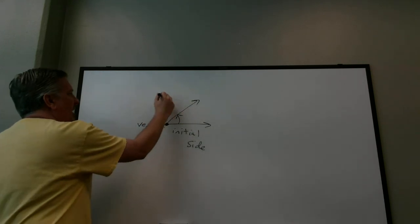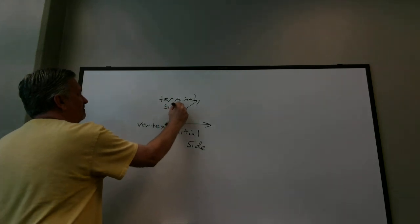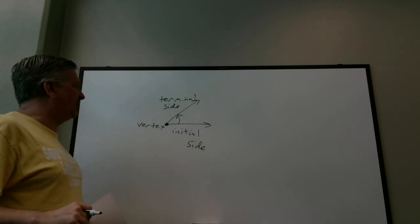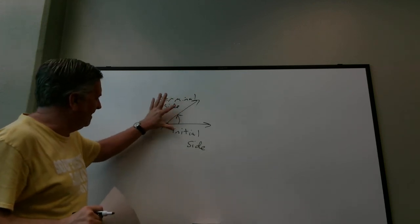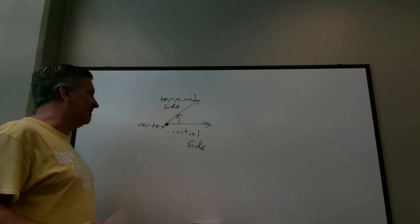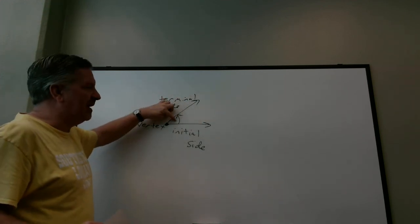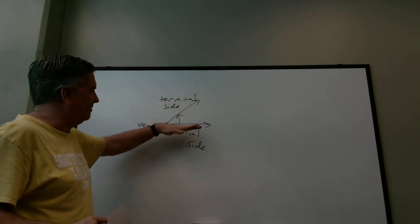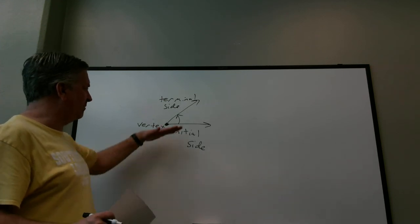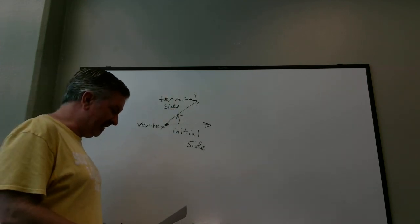Where the ray stops is called the terminal side of the angle. When I first learned geometry, I always thought of an angle as the space between the two sides — the space was the angle. But an angle has three components: an initial side, a terminal side, and the direction you rotate. So it's not the space in between — it's the direction in which you rotate. An angle is an initial side, the terminal side, and the rotation.